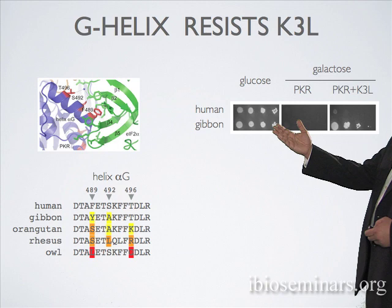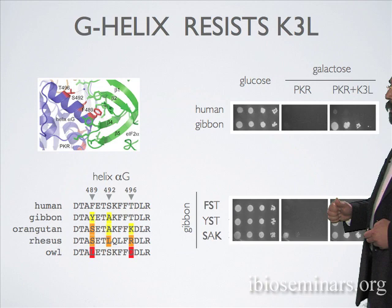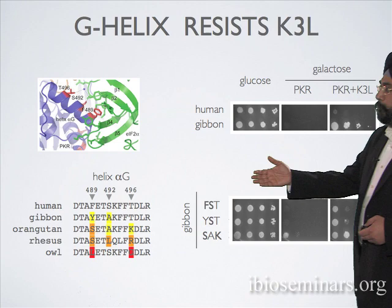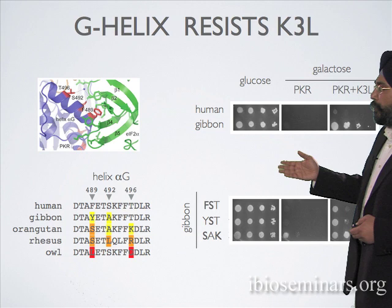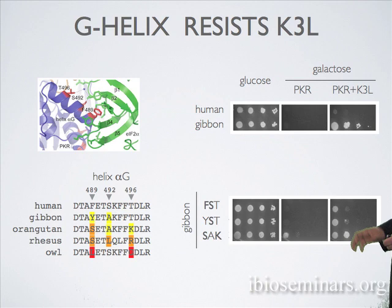Returning to the yeast assay: human PKR maintains growth inhibition even in the presence of K3L; gibbon PKR is completely reversed by K3L. Now, in the gibbon backbone, if we add single amino acid changes from human into gibbon, we can completely reverse the susceptibility phenotype into the resistant phenotype. This highlights two things: first, the interface between PKR and EIF2-alpha is a hot spot for positive selection; and second, individual residue changes — single steps in the arms race between PKR and K3L — result in a complete reversal from susceptibility to resistance.